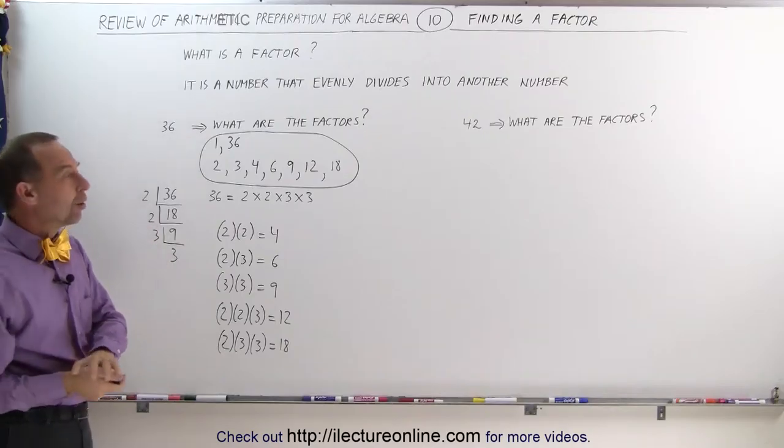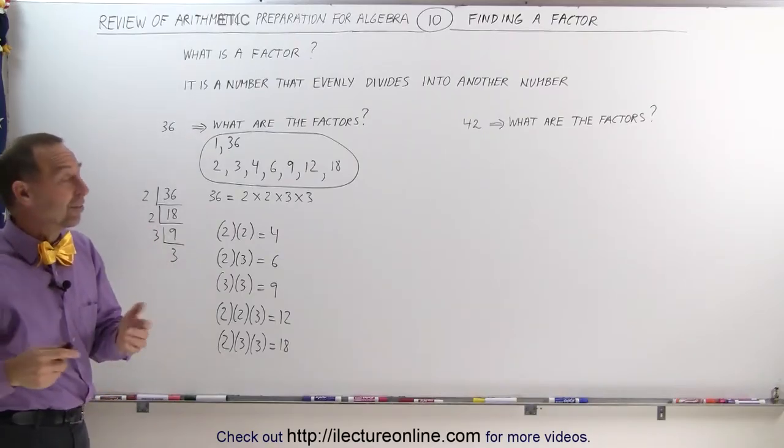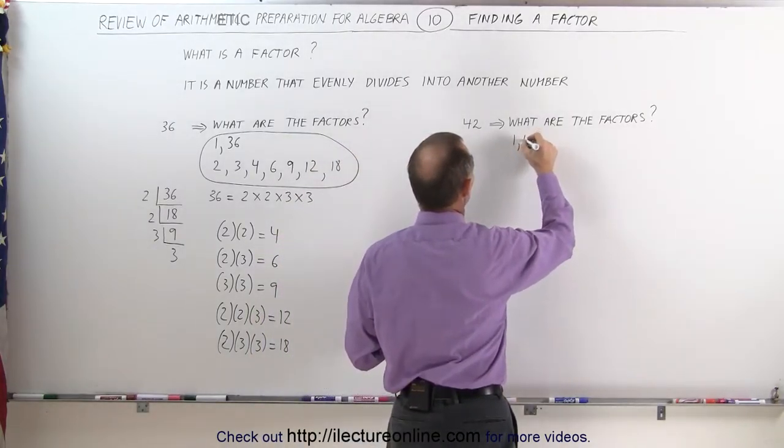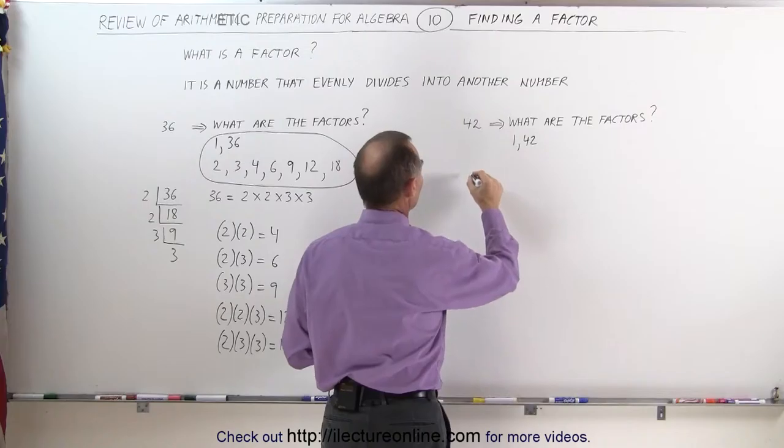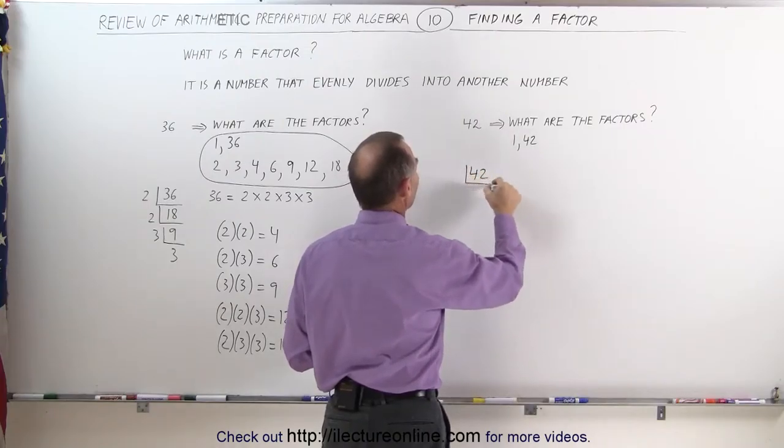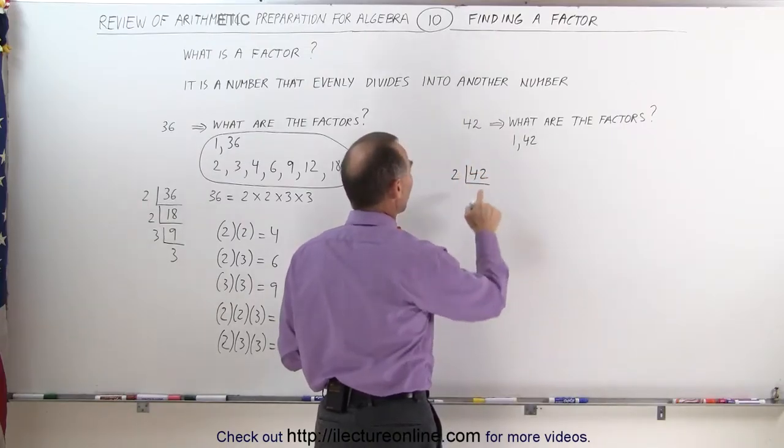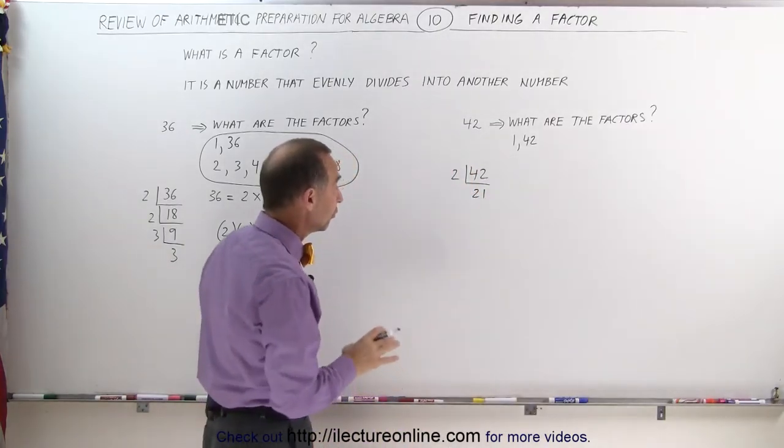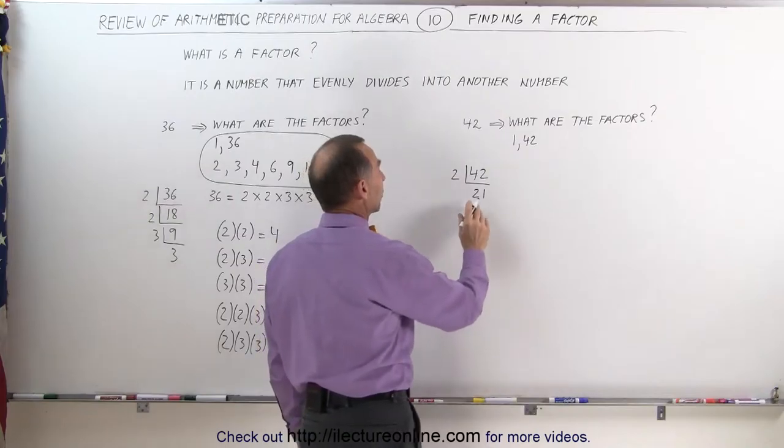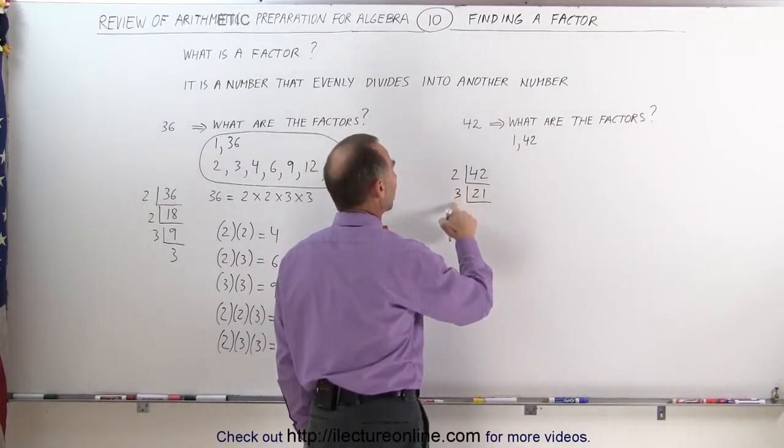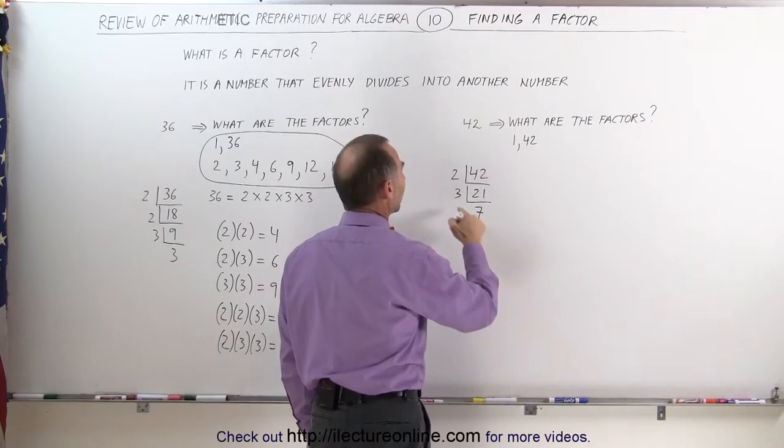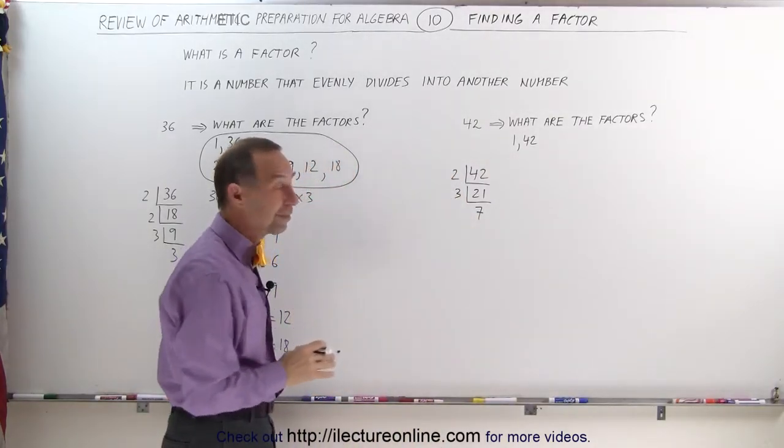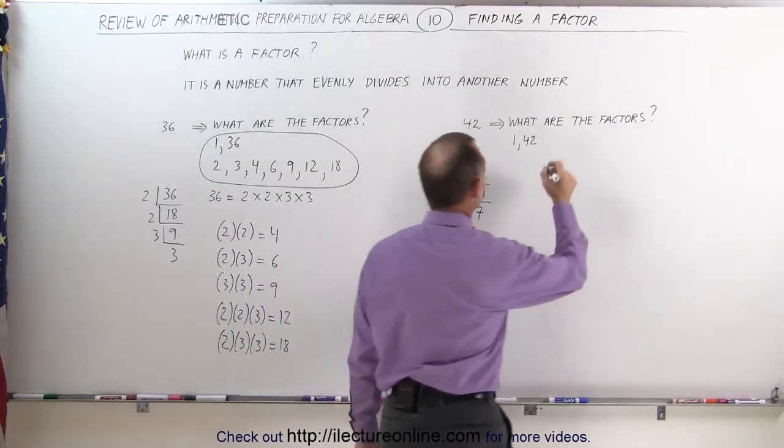Now, let's go find all the factors of the number 42. We'll use the same technique and see what we get. First of all, you know that 1 and 42 will be the factors. And to find the other factors, you take the number 42 and divide it by the smallest prime number 2. 42 divided by 2 gives me 21. Now, that's no longer even, so we can no longer divide 21 by 2. We take the next prime number 3, 3 goes into 21, 7. 3 and 7 are prime numbers, that means we're done. Those are all the factors.